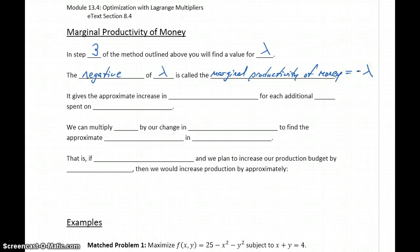What this gives us is the approximate increase in production for each additional dollar spent on production.